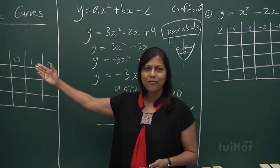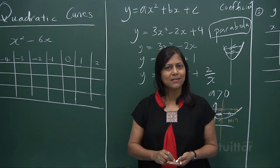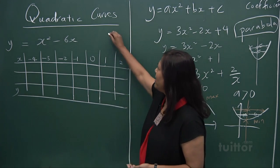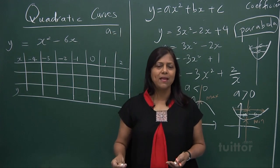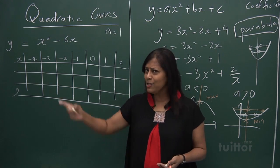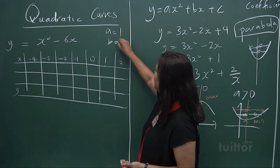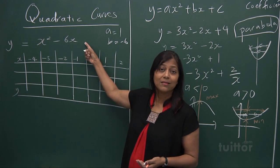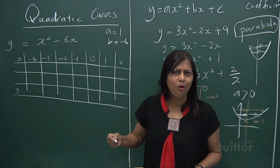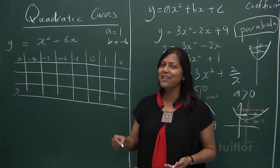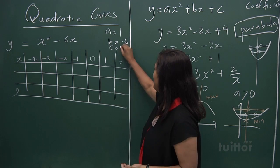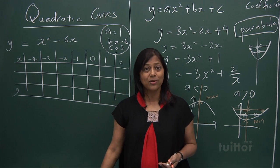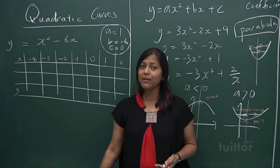Let's look at this graph. Do you see what your a is? Your a is the coefficient of x squared, and your a is 1. Your b is the coefficient of x, and your b is minus 6. And your c — there's nothing there, so c is zero. Having got this, we can recognize at once that this is a quadratic equation, and we're going to plot this graph.